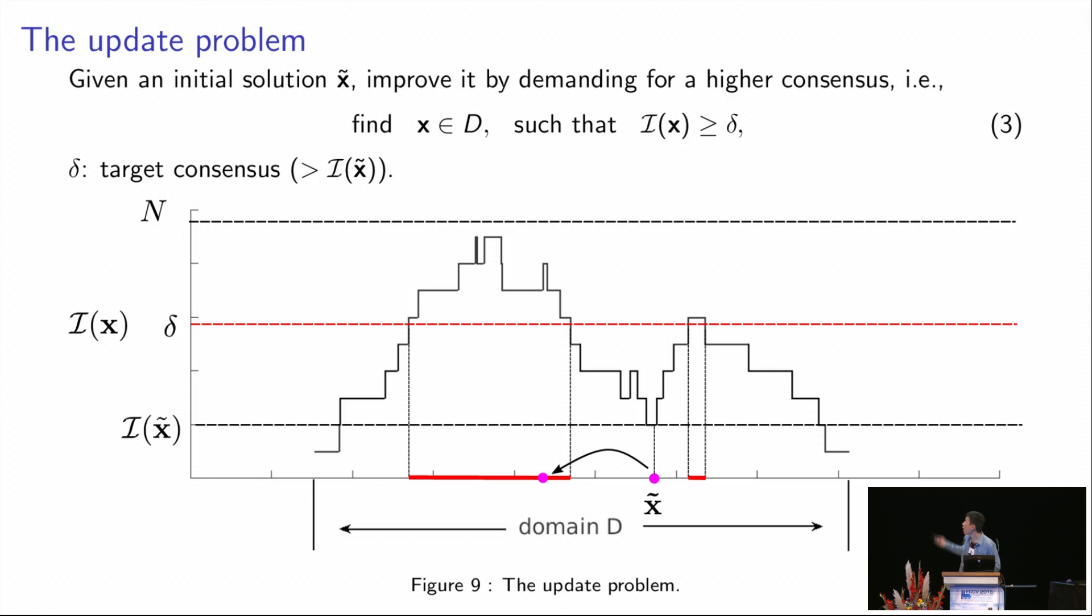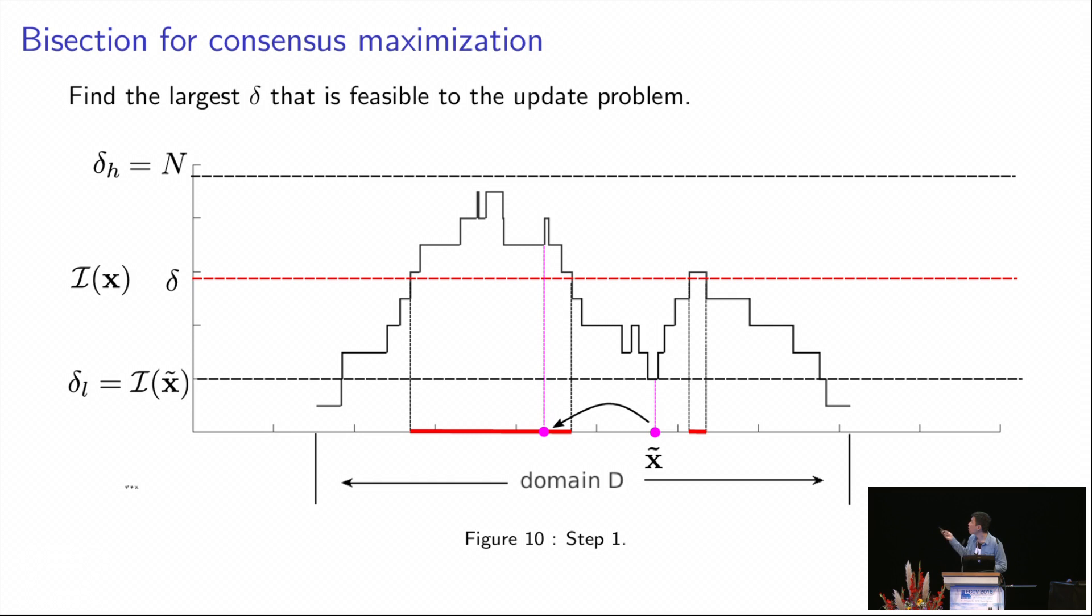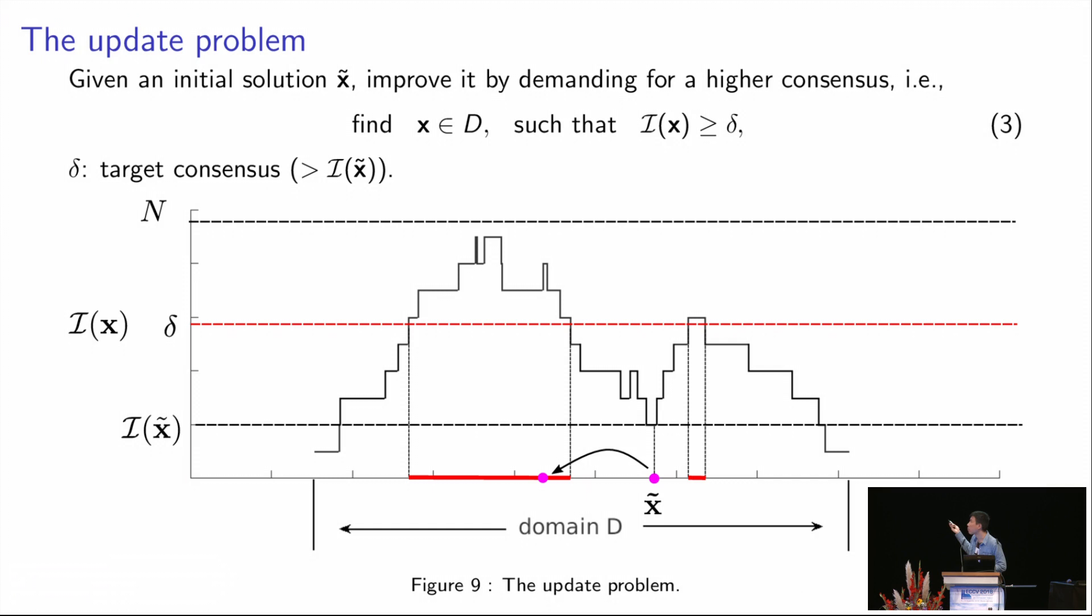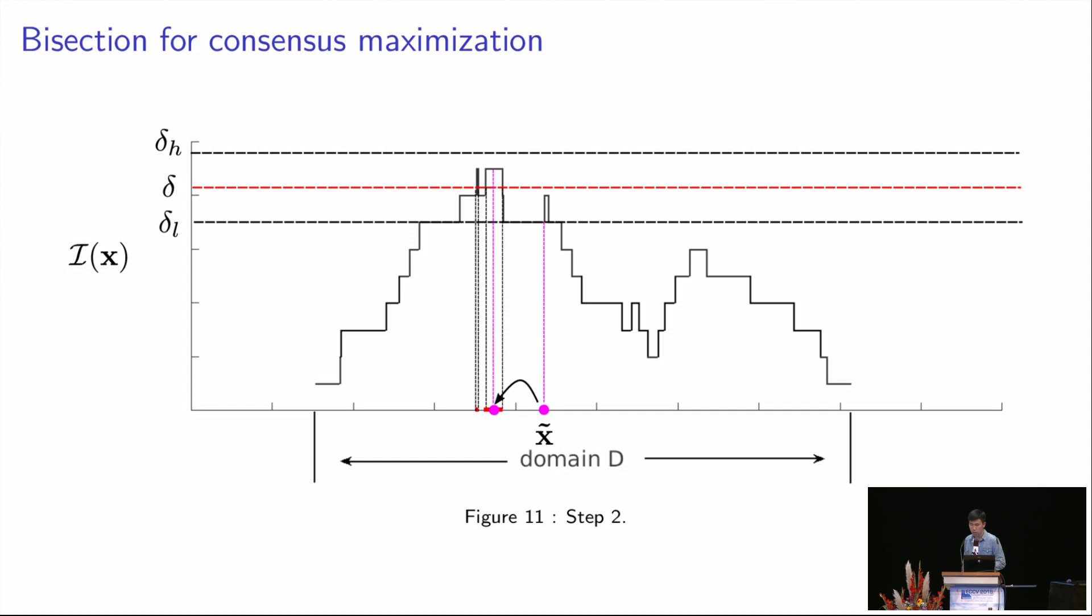Imagine that if all of these update problems are solvable for every delta, then we can simply solve consensus maximization by finding the largest delta that is feasible to the update problem. Because the consensus is the thing we want to maximize. And if we find the maximum delta that is feasible to this problem, the delta will be exactly equal to the maximum consensus value. In each iteration of the bisection, we solve one update problem, and iteratively tighten the bound of delta until they meet.